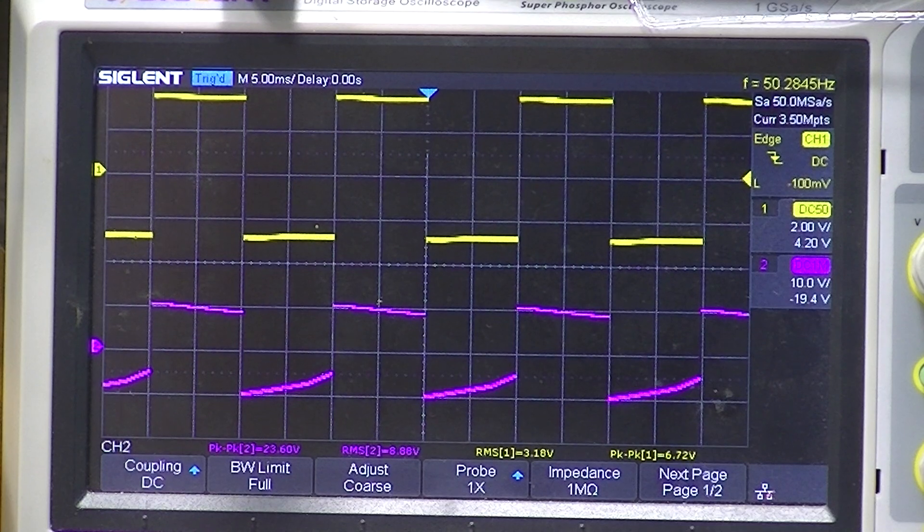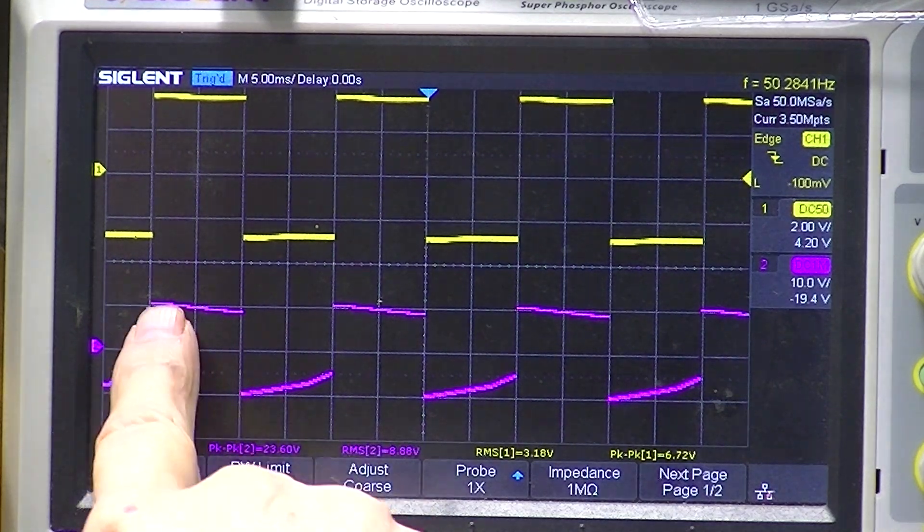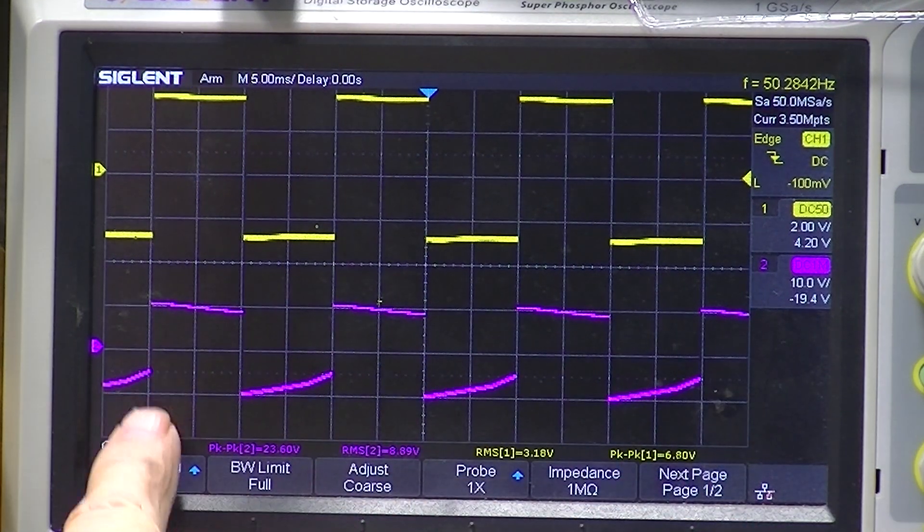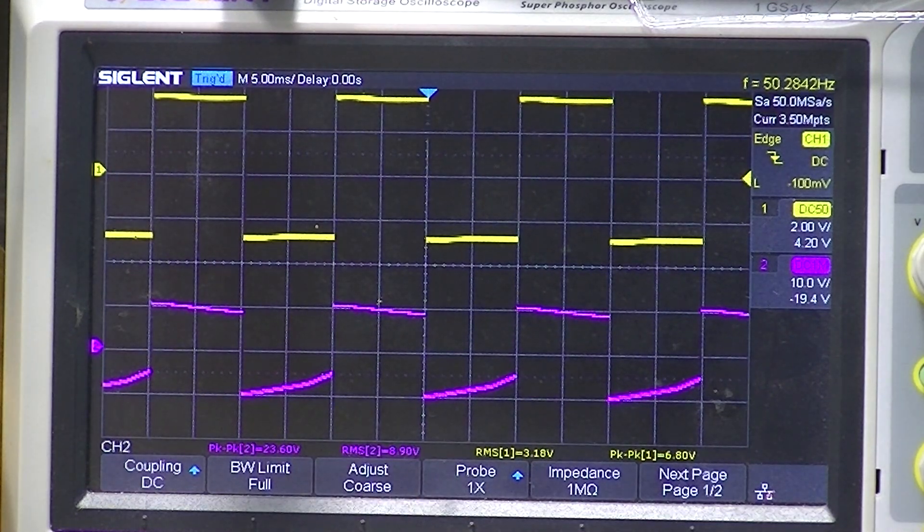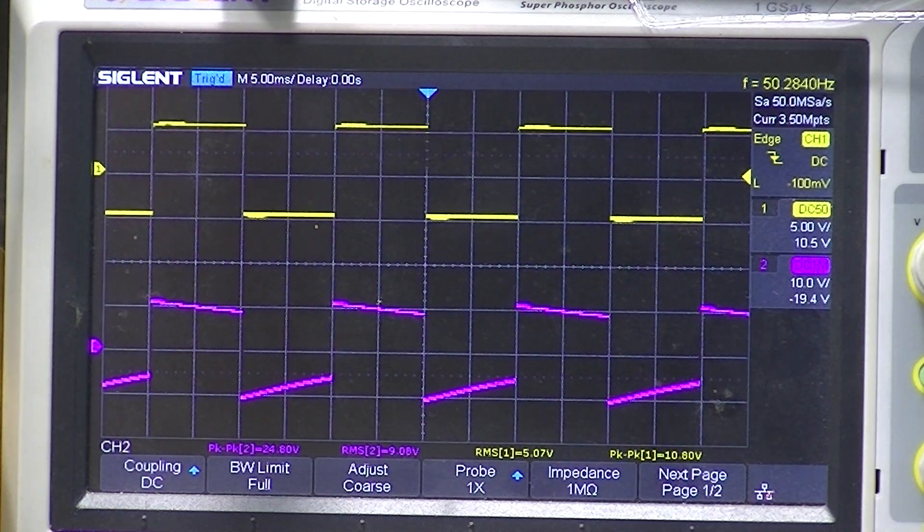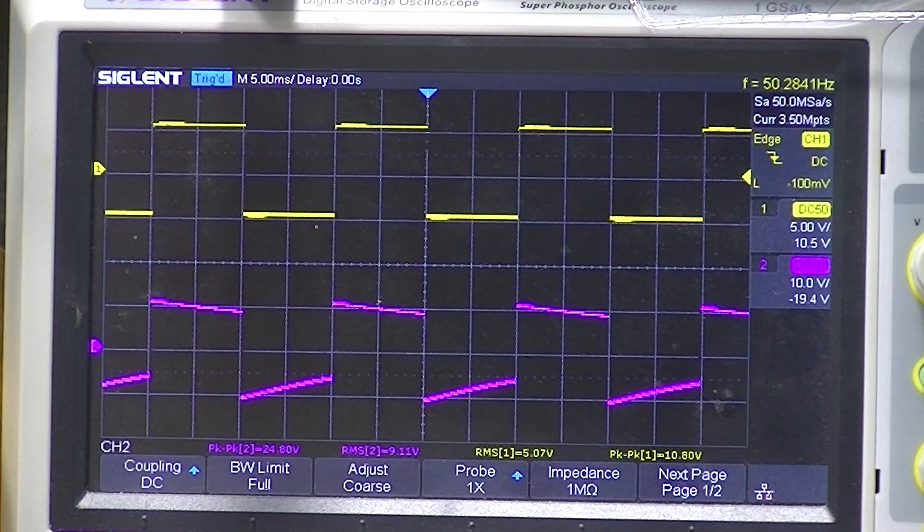This is driving an 8 ohm load. The RMS voltage of this waveform is 8.8 volts, 8.6 volts, pretty close to 10 watts. I'm going to change this to 50 kilohertz.